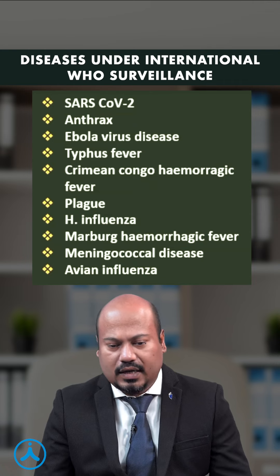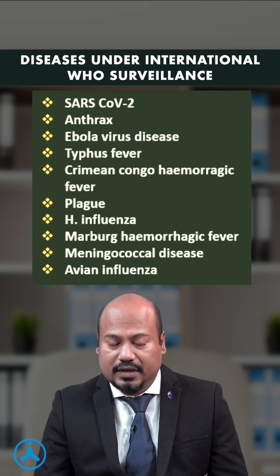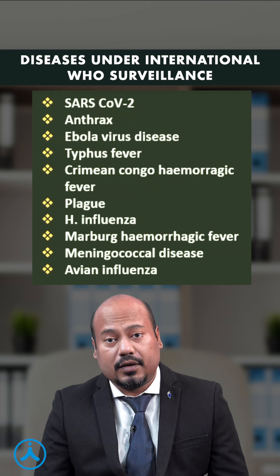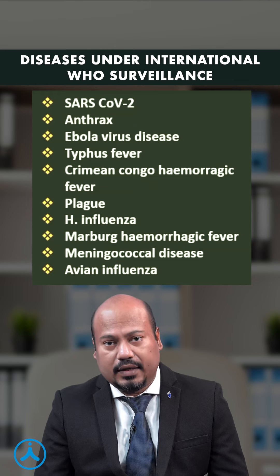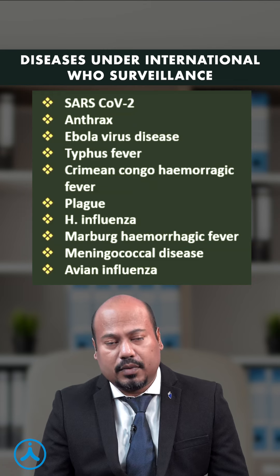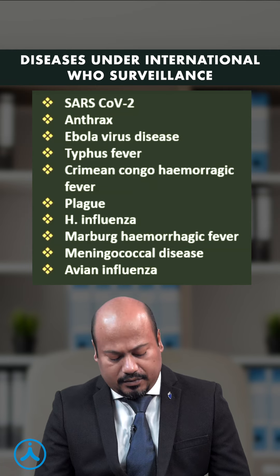Which diseases are under international WHO surveillance? SARS-CoV-2, anthrax, Ebola, typhus fever, Crimean-Congo hemorrhagic fever, plague, Haemophilus influenzae, Marburg hemorrhagic fever, meningococcal disease, and avian influenza.